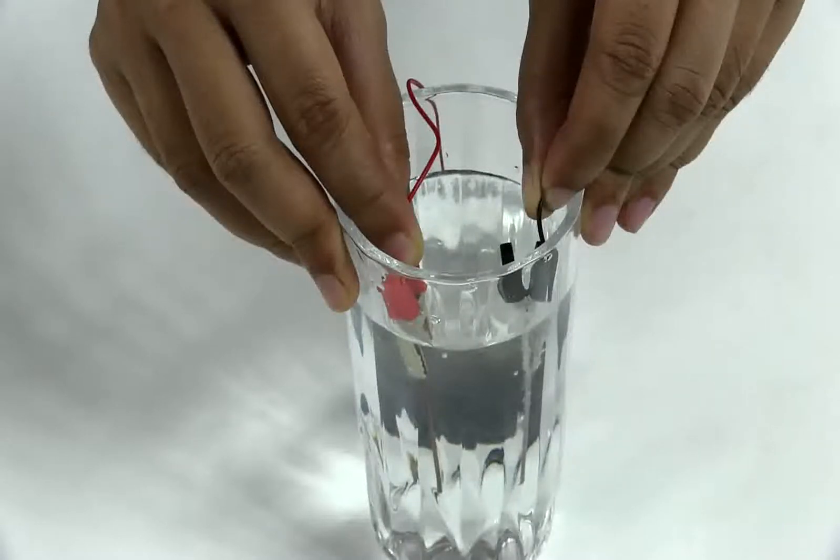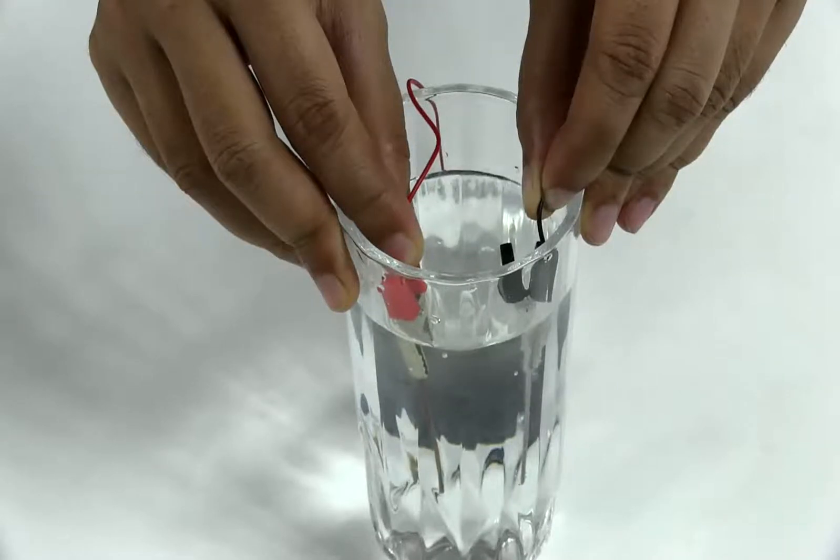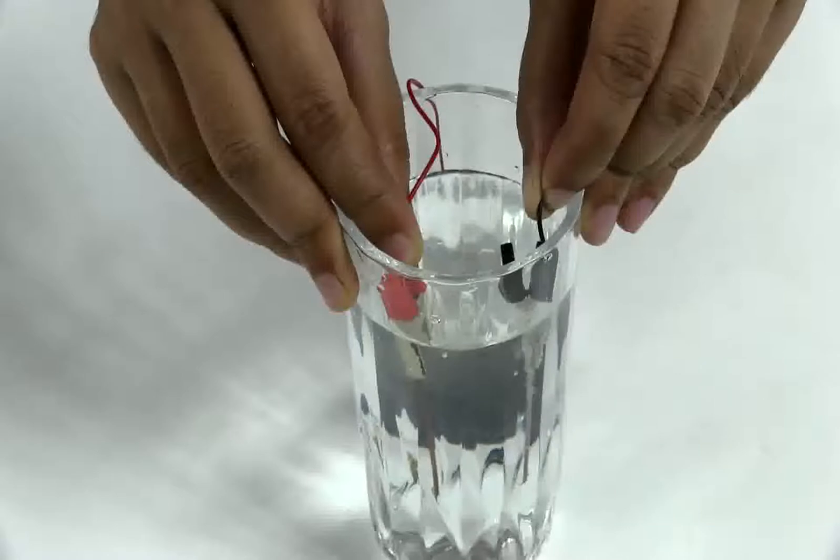Actually, at the positive end, chlorine gas is produced, which in turn reacts with the water to make hydrogen chloride.